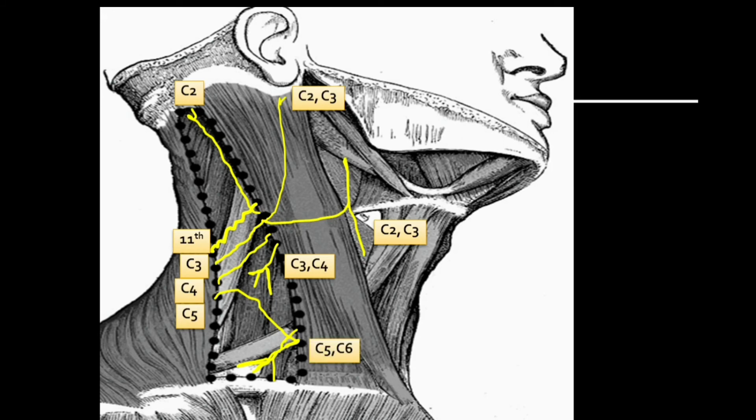Another structure we can see between the scalenus anterior and medius is the brachial plexus. Here is the upper trunk of the brachial plexus. We can also see the middle and lower trunk of the brachial plexus.